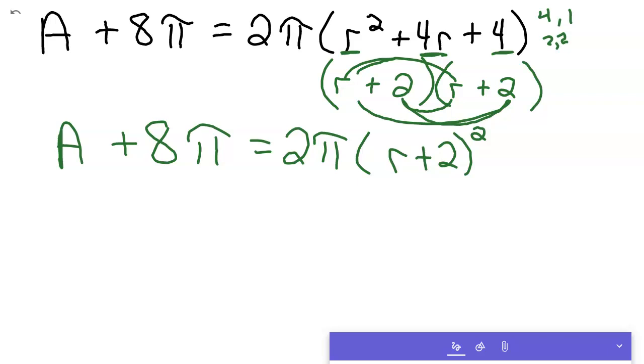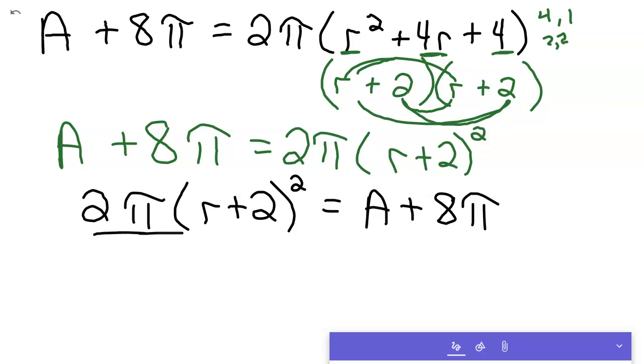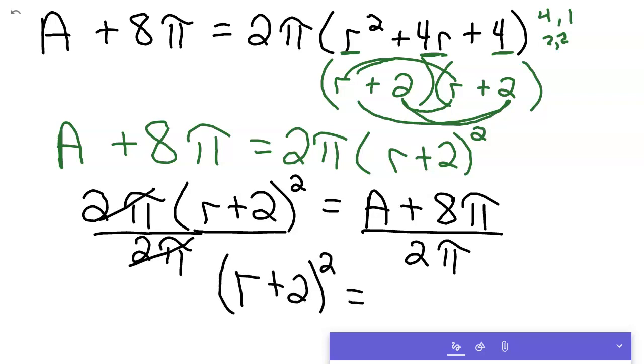And so at this point, I'm going to use the symmetric property and flip this all around because I don't like solving things from the right to the left. It doesn't really matter. You wouldn't have to do this step, but I like to do it because we're solving for r. And you've got this. So we've got 2π times (r+2)² equals A plus 8π. So the next step you're going to want to do then is try to get this r by itself. So you're going to divide both sides by 2π, both sides of the equation. And what's nice is if you do that, then this left side cancels out because that's 1. And you're just left with (r+2)² equals A plus 8π over 2π.